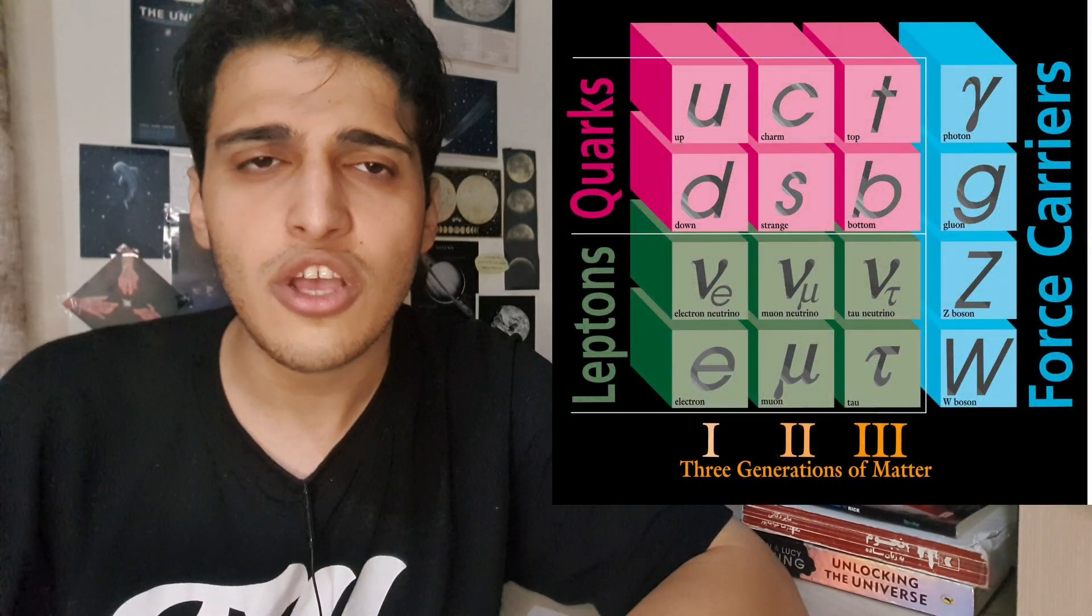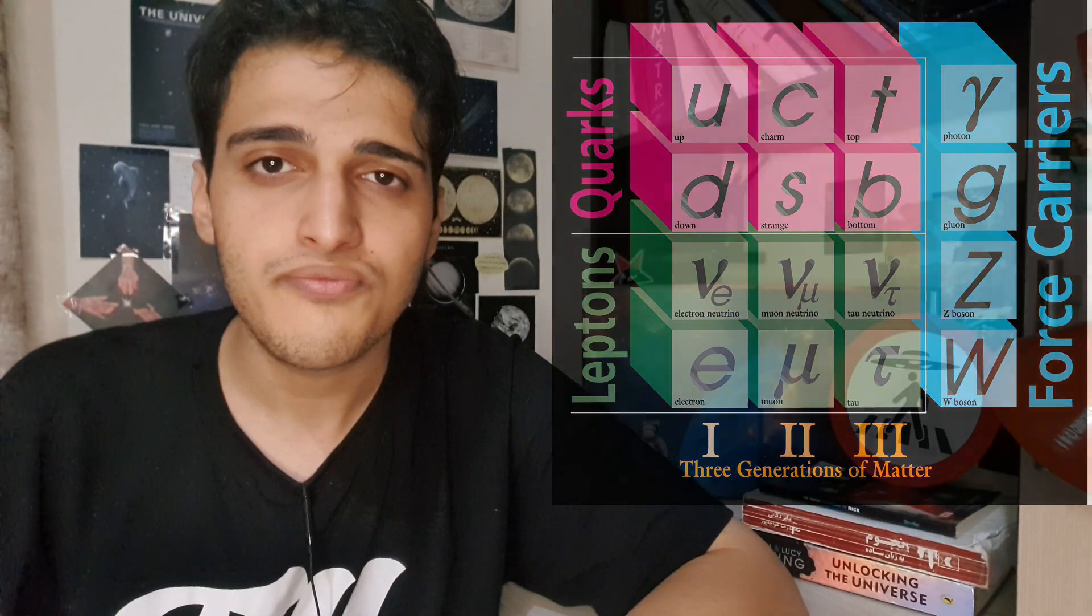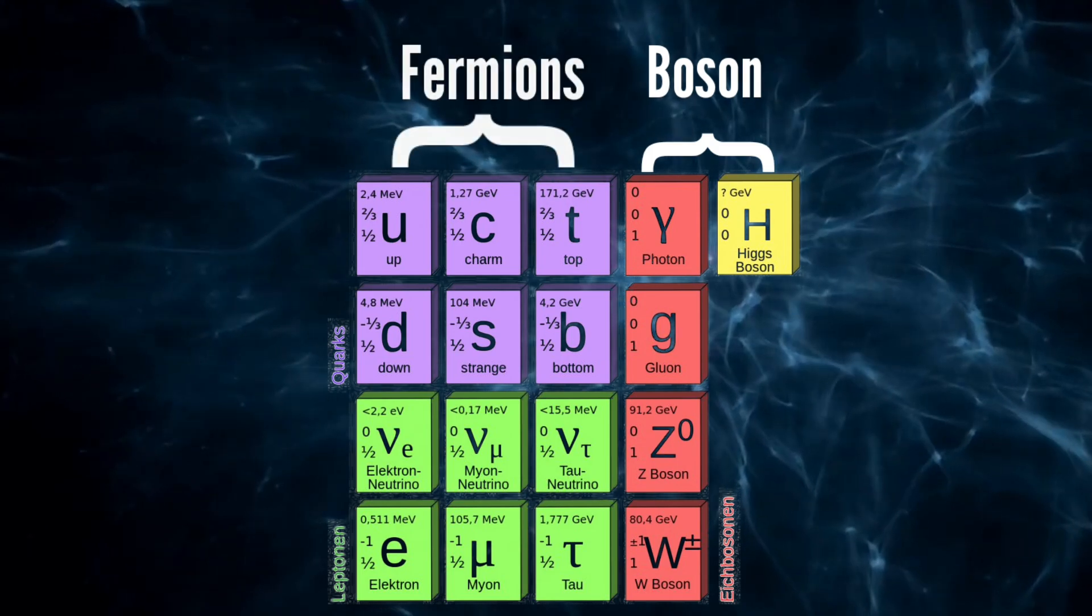All the particles in the universe are represented in this table. The table is divided into two sections: bosons and fermions.